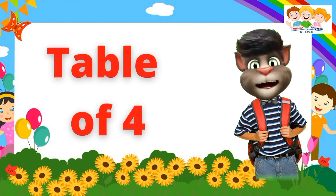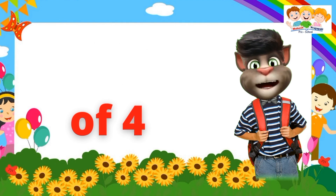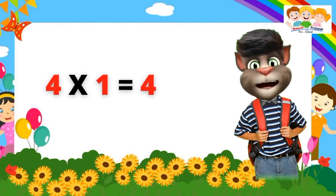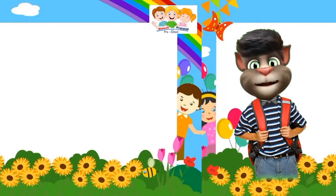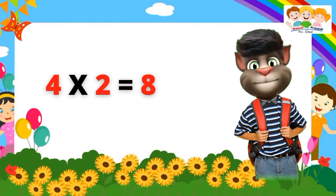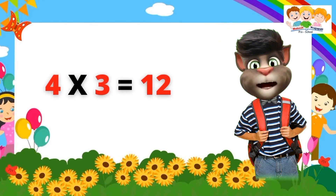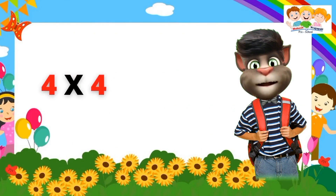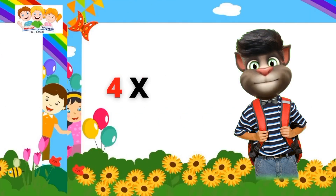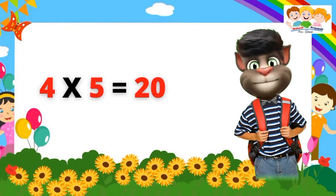Table of Four. Four ones are four. Four ones are four. Four twos are eight. Four twos are eight. Four threes are twelve. Four threes are twelve. Four fours are sixteen. Four fours are sixteen. Four fives are twenty.